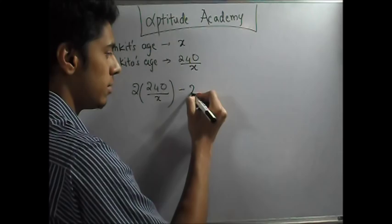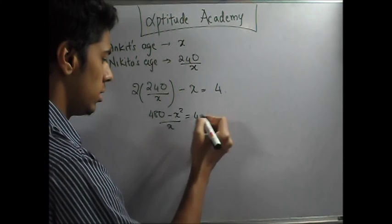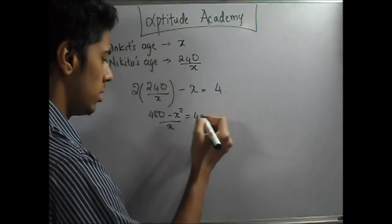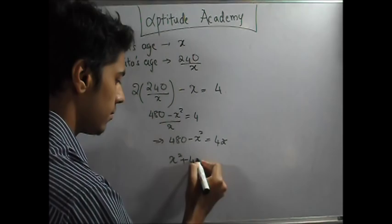Let's simplify this equation. So this is 480 - take an x multiplied here - so minus x squared upon x equals 4. This gives you 480 minus x squared equals 4x. Take it to one side: x squared plus 4x minus 480 equals 0. Now let's factorize this.